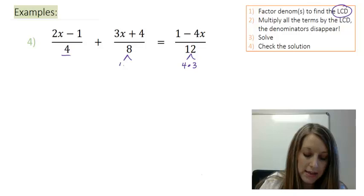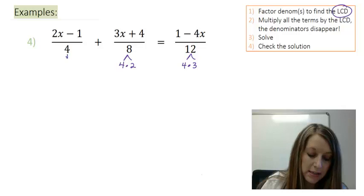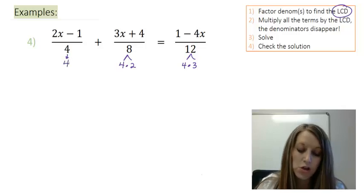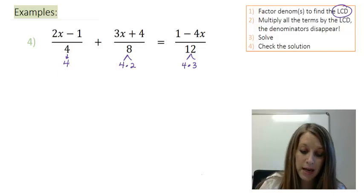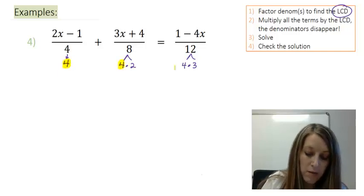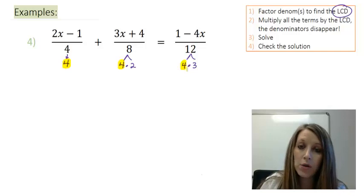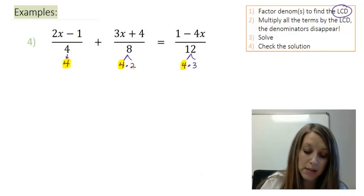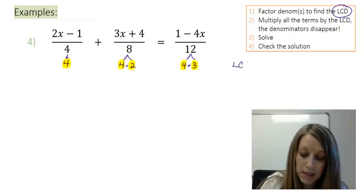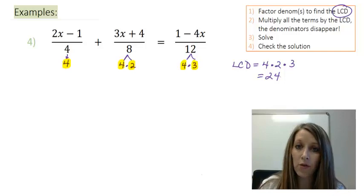8 I can write as a 4 times 2. And of course 4 I can just write as itself as 4. So my LCD needs to have all of these pieces in it. It needs to have the 4 that all of them have in common. But it also needs to have these other missing pieces. It needs to have the 2 and it needs to have the 3. So my LCD here is 4 times 2 times 3. Or overall my LCD is 24.